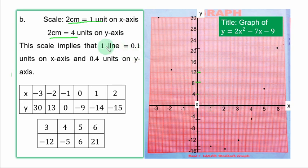On the s-axis, 2 cm is 1 unit, as you can see to both left and right. This scale implies that 1 line equals 0.1 on the s-axis. If you divide 1 by 10, you have 0.1. And on the y-axis, 1 line equals 0.4 units. Knowing what 1 line stands for helps us locate decimal values. The first point: when s is -3, y is 30, and you plot it at this point.